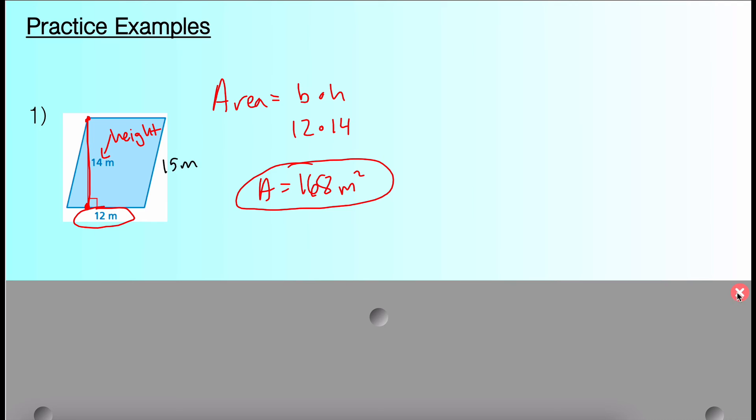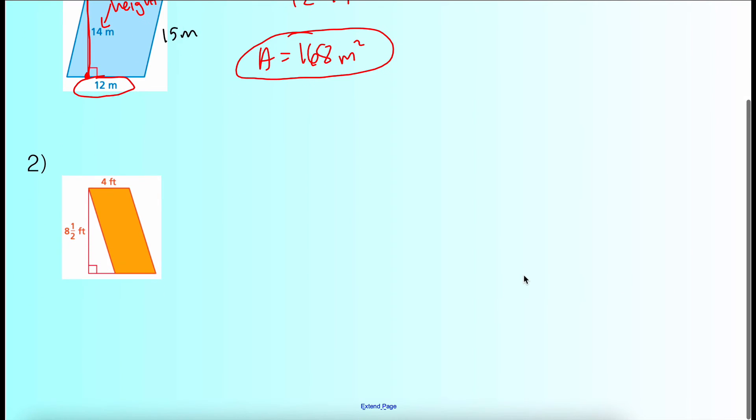Practice example number one. Cool. I'm going to show you the next one, and then give you an opportunity to come up with an answer on your own, type it in, and see how you do. So this orange parallelogram. So hopefully you identified that the base is 4, the height is 8.5, and that means it's a pretty simple multiplication problem. 8.5 times 4 is what your setup should be, and then final answer. I hope you got 34 feet squared, because the base again is 4, and the height is 8.5. That's it.